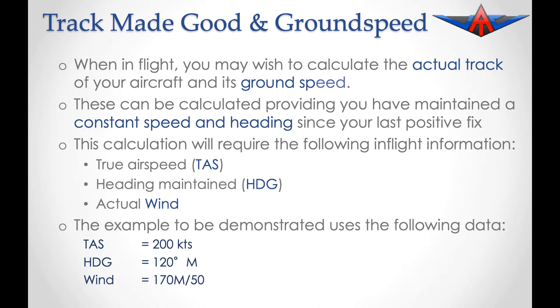For our example, we're going to look at an aircraft with a TAS of 200 knots, a heading of 120 degrees magnetic, and an actual wind of 170 degrees magnetic at 50 knots.